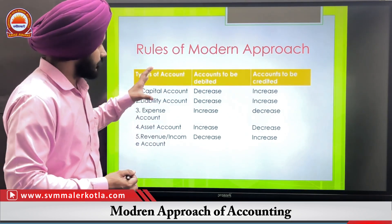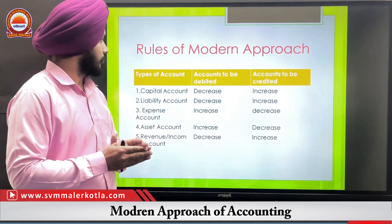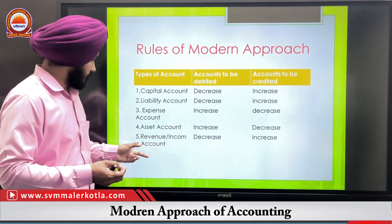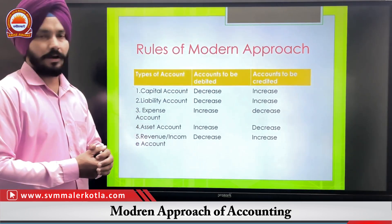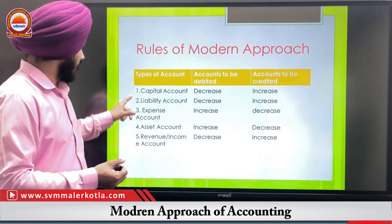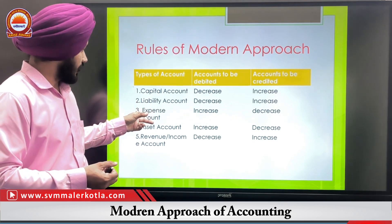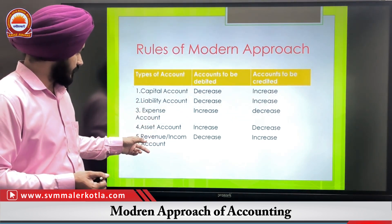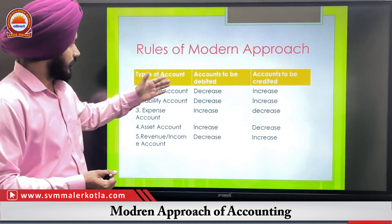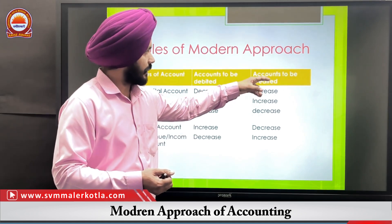In the modern approach, our accounts and items are classified into types. There are five types of accounts, which we can remember using the acronym CLEAR: C stands for Capital, L stands for Liability, E stands for Expense, A stands for Assets, and R stands for Revenue. The second heading is accounts to be debited and the third heading is accounts to be credited.